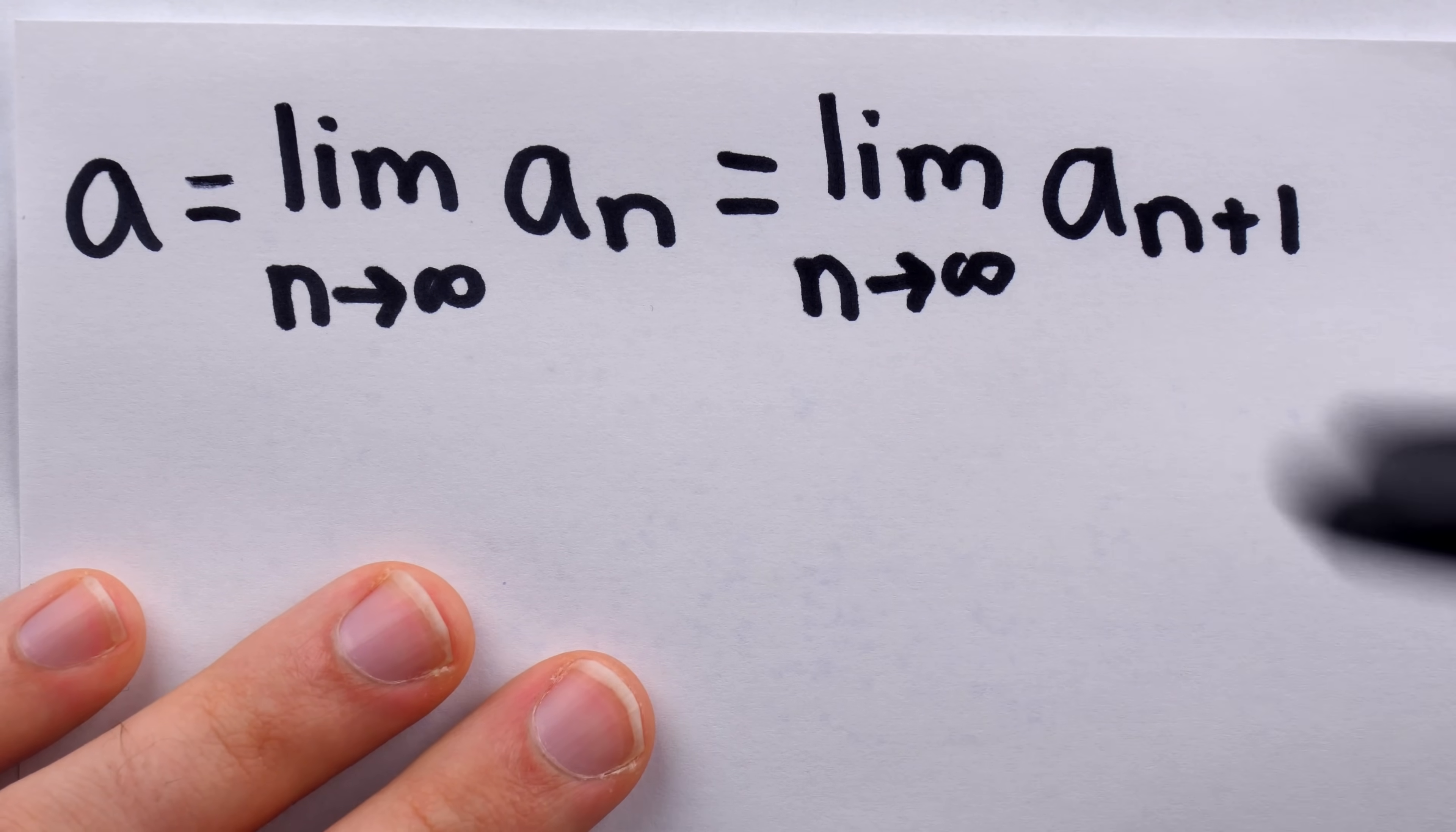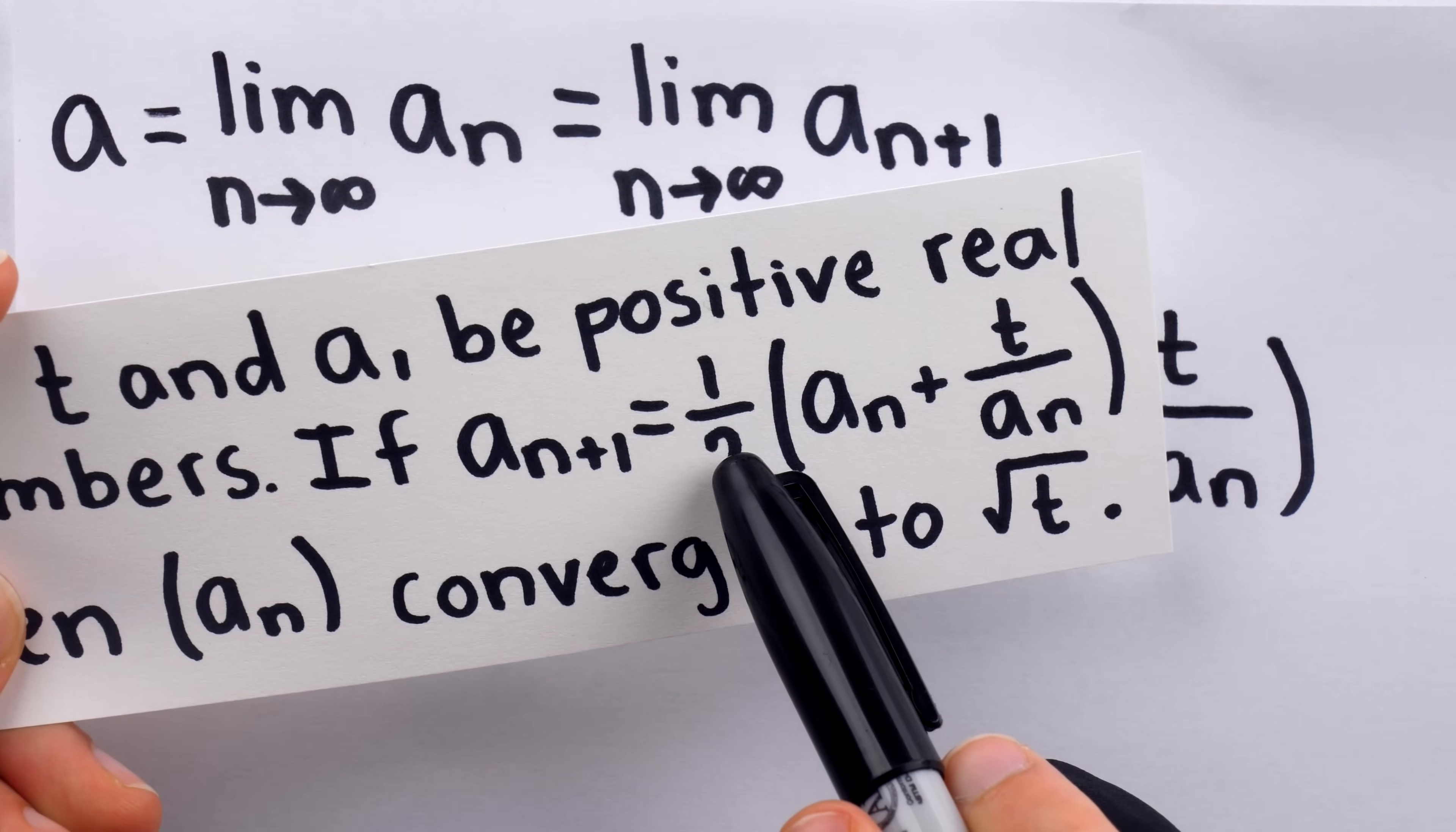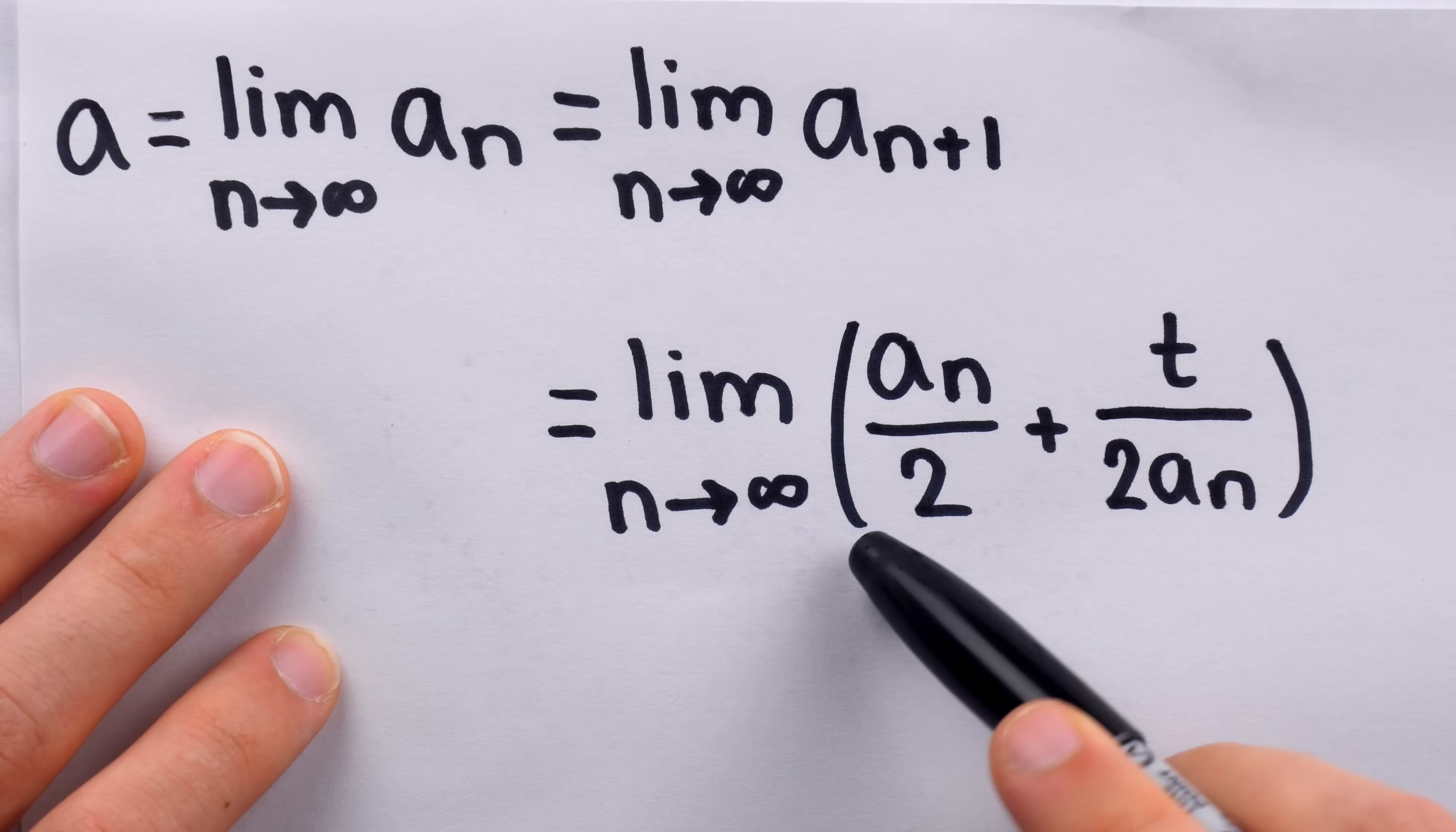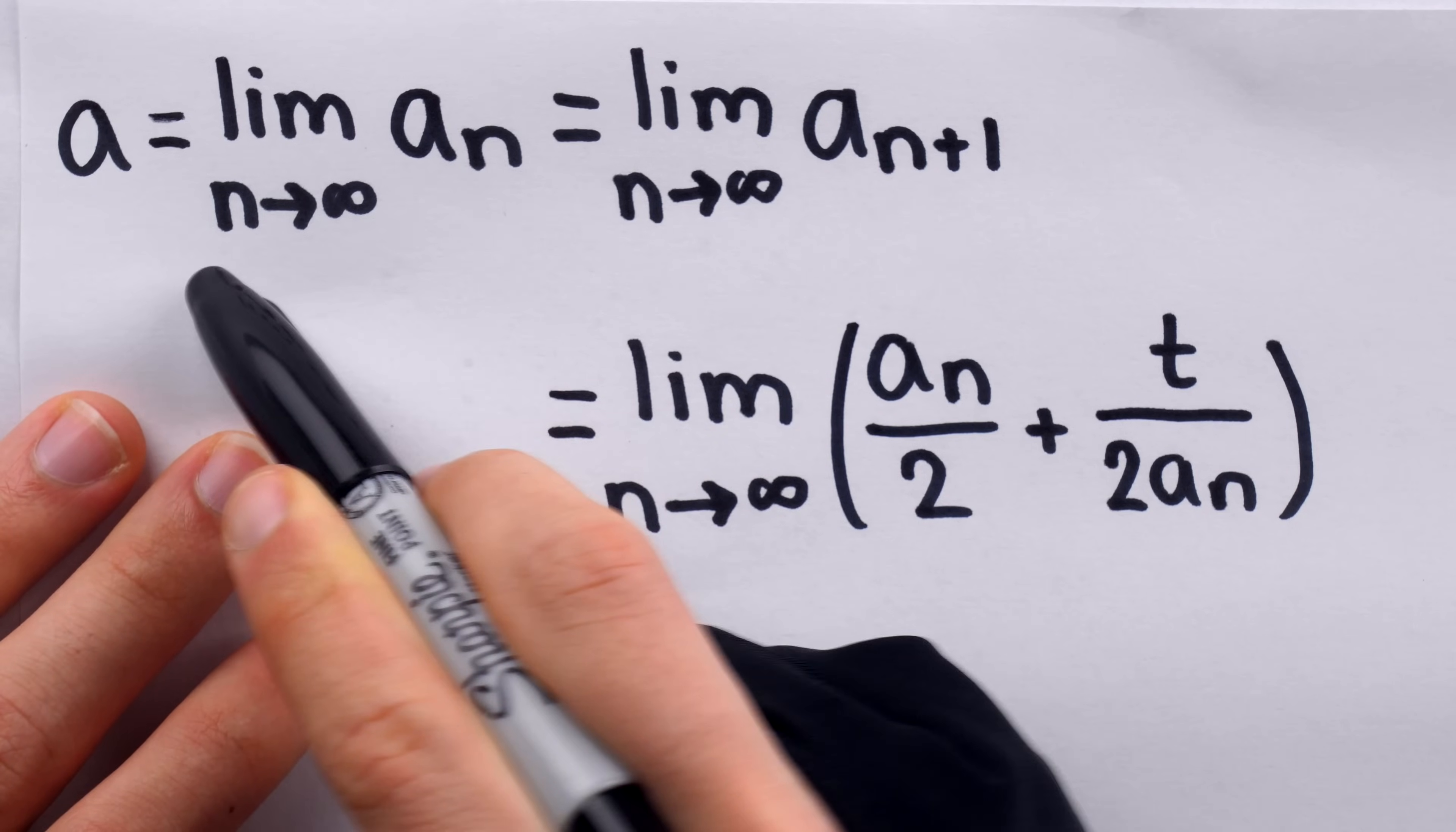What's the point of writing that? Well, we can replace a n plus 1 with all of this stuff by that recursion. So, this is the limit as n goes to infinity of a n over 2 plus t over 2 a n. Again, remember, we're just distributing that one half through the parentheses. But then, by limit laws that you may or may not be familiar with, we can apply the limit to these terms individually because they both exist. The limit of a n over 2 as n goes to infinity is a over 2, and the limit of t over 2 a n as n goes to infinity is t over 2 a, because we know that a n goes to a as n goes to infinity.